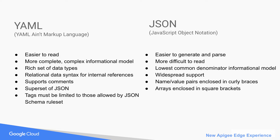JSON is easier to generate and parse, but more difficult to read than YAML. Providing the lowest common denominator informational model, JSON has widespread support.